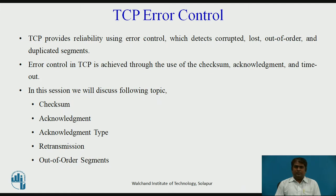TCP provides reliability using error control. Error control includes mechanisms for detecting and resending corrupted segments, resending lost segments, storing out-of-order segments until missing segments arrive, and detecting and discarding duplicated segments.